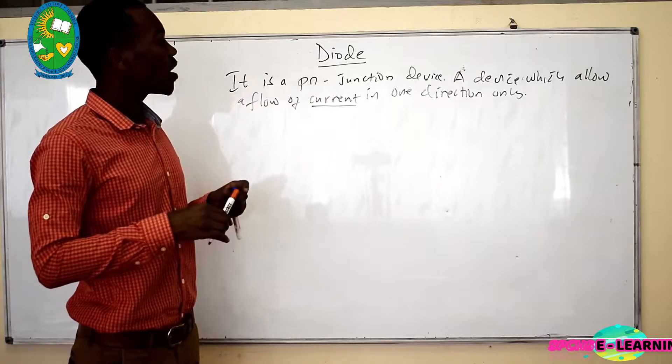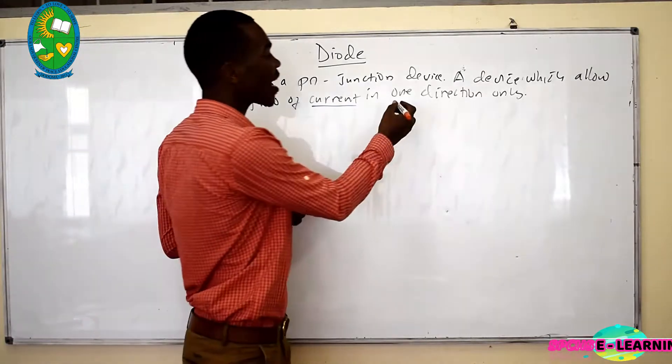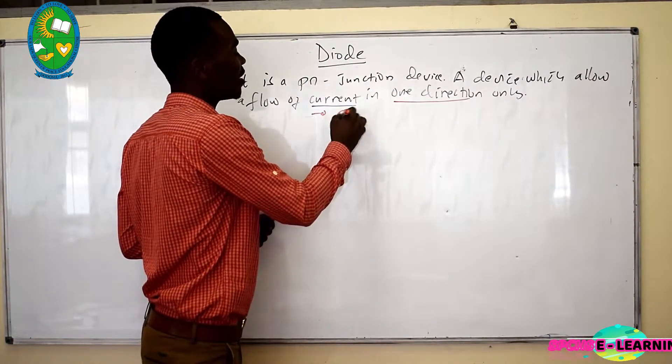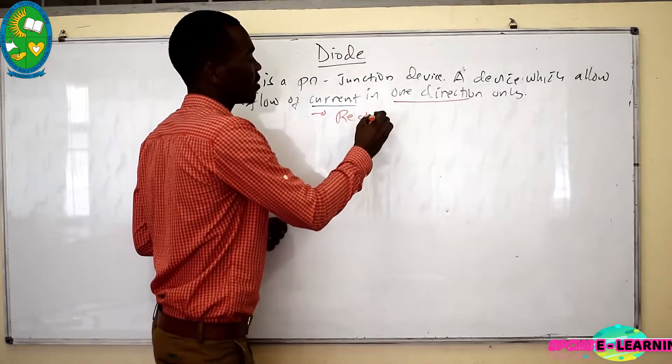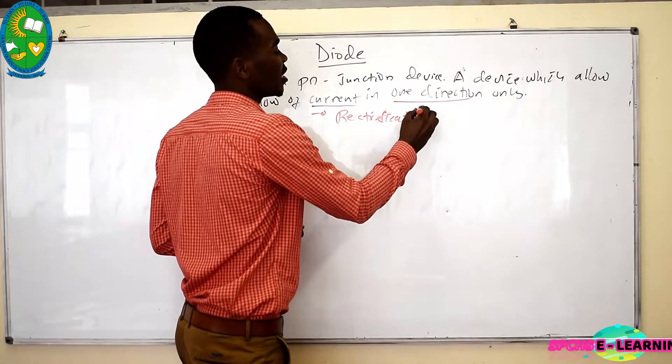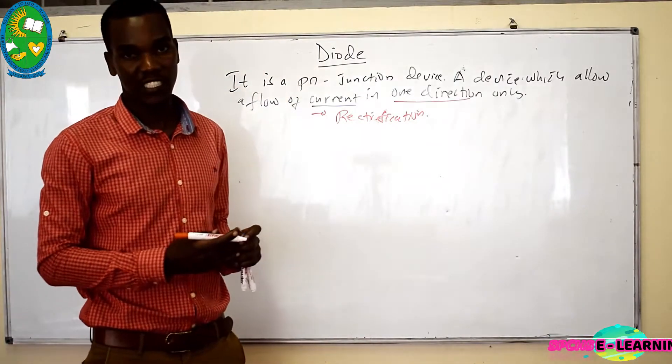This diode, its characteristics of allowing current in one direction only make it applicable in rectification. Rectification, which is a very important process.